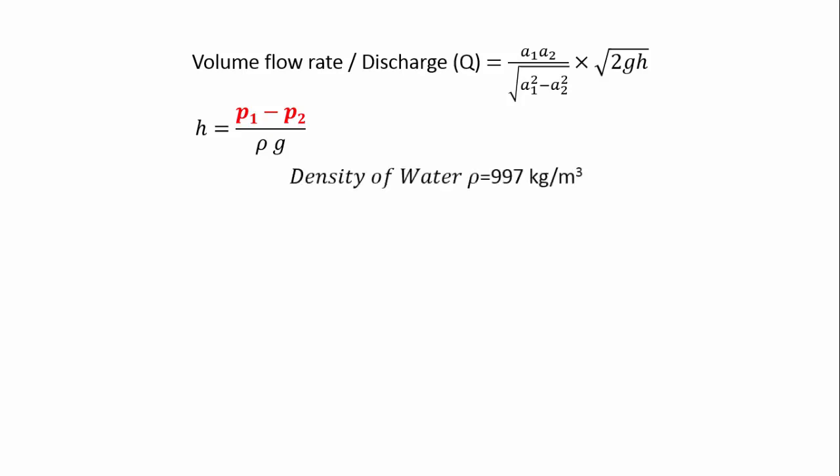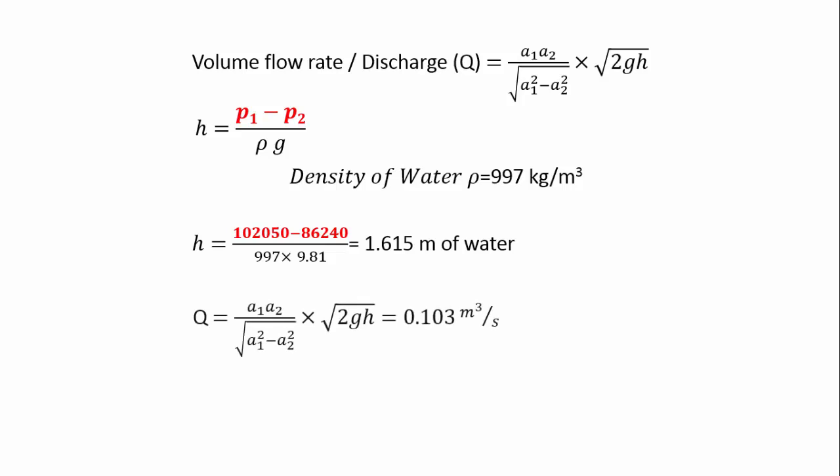The term h is actually the difference in pressure head, where P1 and P2 are the pressure values that we have computed from the contour results. Rho is the density of water. Just plug in all the values to get the volume flow rate of the fluid through the VentureMeter.